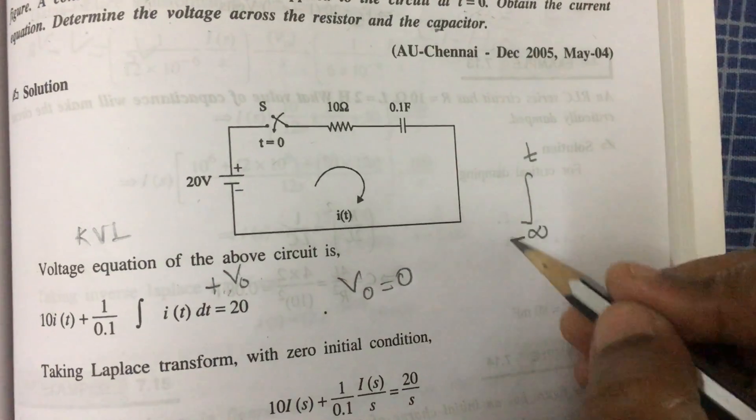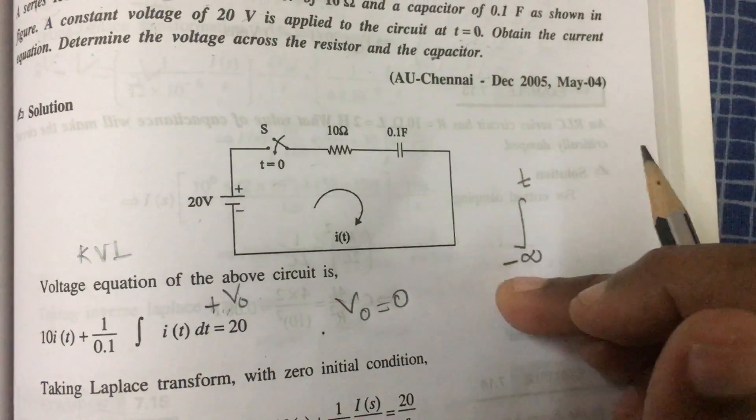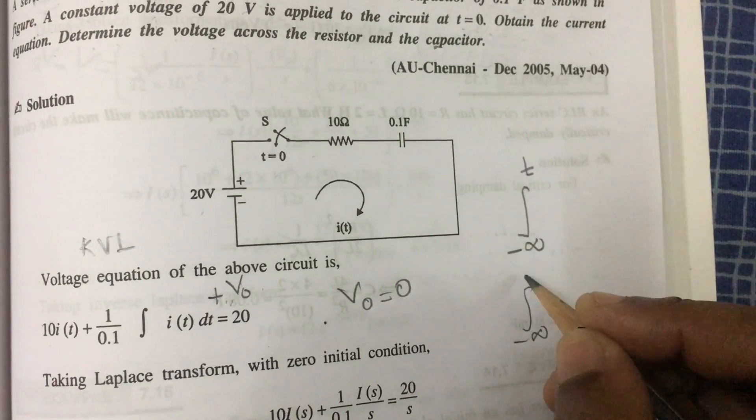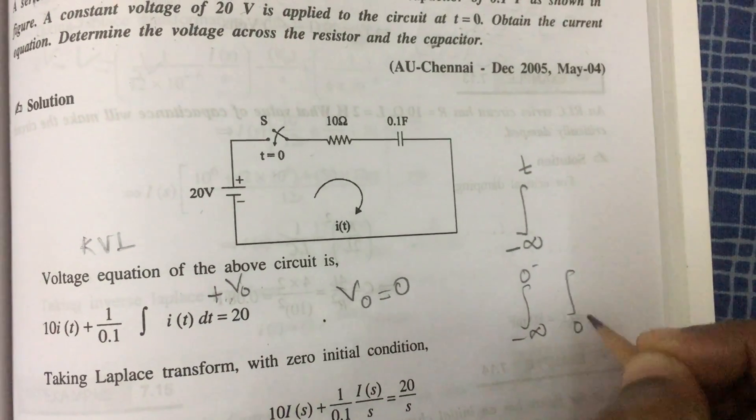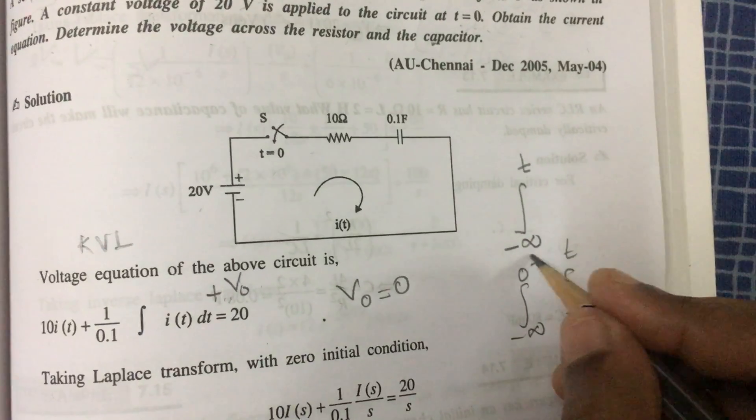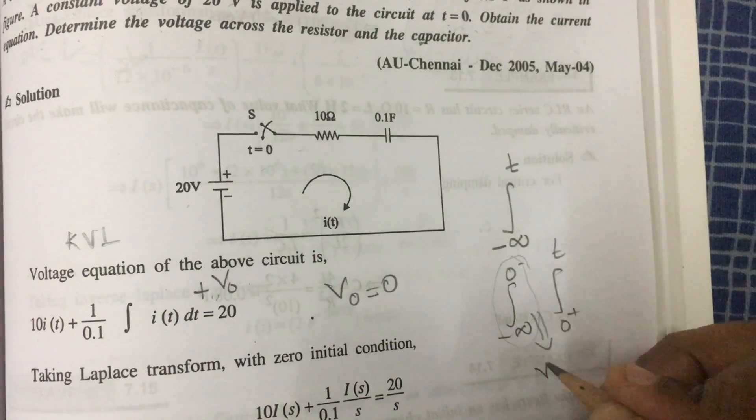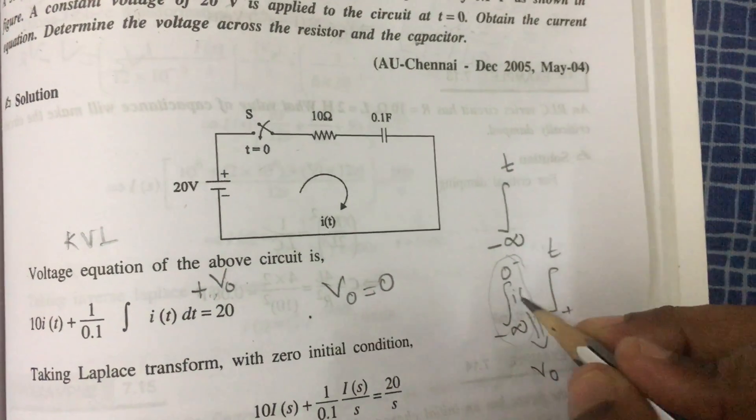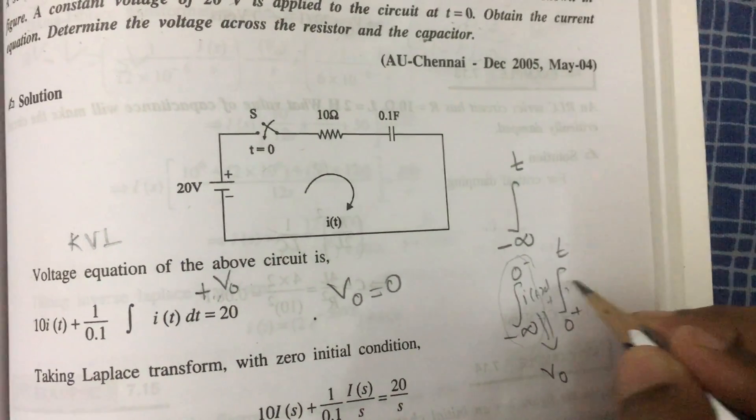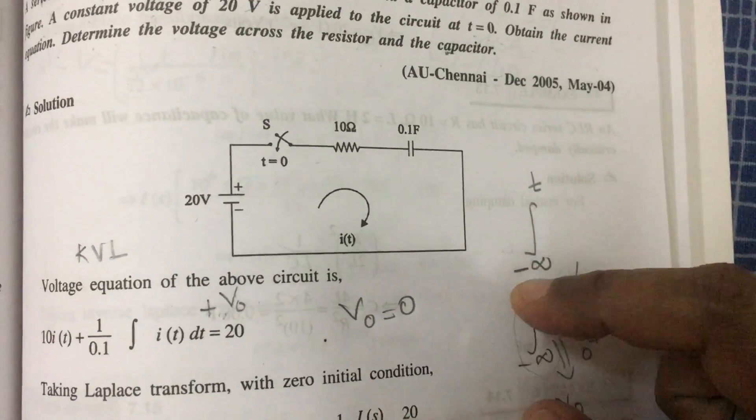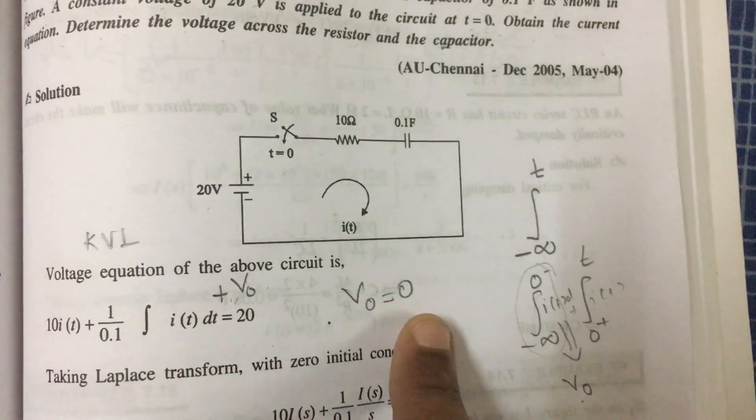The total voltage across the capacitor, we integrate from minus infinity to 0 minus to 0 plus to t. In steady state condition, we take V0. This i(t) dt plus this i(t) dt, this value is taken as the V0. At steady state condition, this V0 value is equal to 0.